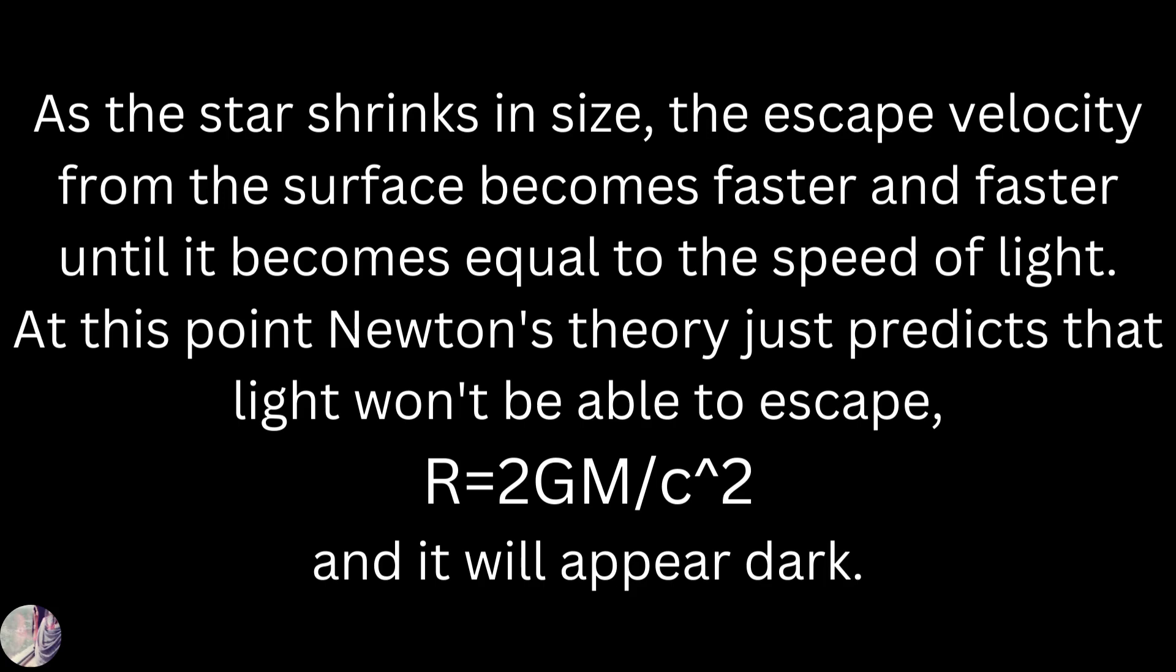As the star shrinks in size, the escape velocity from the surface becomes faster and faster until it becomes equal to the speed of light. At this point, Newton's theory just predicts that light won't be able to escape. R is equal to 2GM divided by c squared where c represents the speed of light, and it will appear dark.